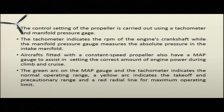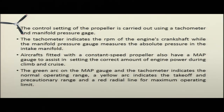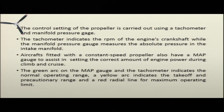The tachometer indicates the RPM of the engine's crankshaft or the propeller, while the manifold pressure gauge measures the absolute pressure in the intake manifold. Aircraft fitted with a constant speed propeller also have a manifold pressure gauge to assist in setting the correct amount of engine power during climb and cruise. On the gauges, the green arc is for normal operating range, the yellow arc indicates the precautionary range, and the red line is the maximum operating limit.